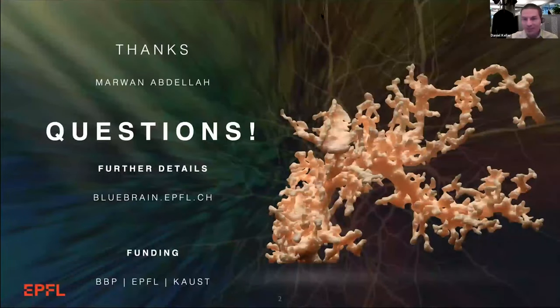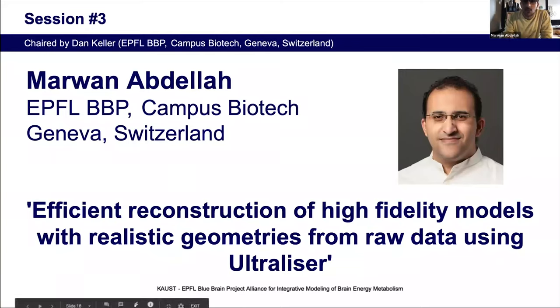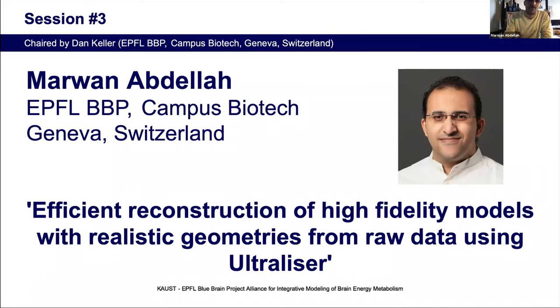Thank you, Marwan. There was a question in the chat: some meshes you showed appear disconnected — is this intentional or a result of mesh decimation? For the vasculature data set, you have many polylines in the same data set so they are disconnected because the graph is not completely connected. For the astrocyte meshes, it depends on the segmentation — you might have one mesh with multiple mesh objects because of the segmentation. Currently we are in the process of open-sourcing Ultralizer; probably in less than a month it will be available on Blue Brain GitHub. For the meshes themselves, they will be available via a web portal we are making available, or you can write us to share them sooner.